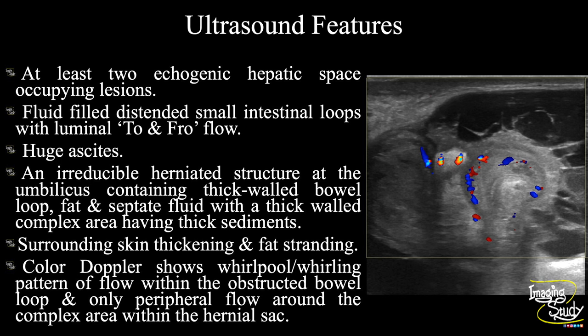So overall, this is a case of strangulated umbilical hernia with features of complication — abscess formation within the sac, small intestinal obstruction, ascites, and two echoic space-occupying lesions within the liver.